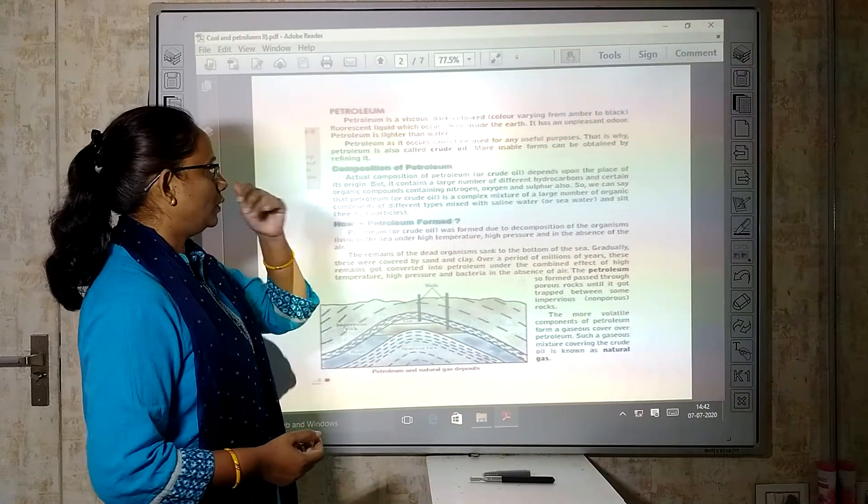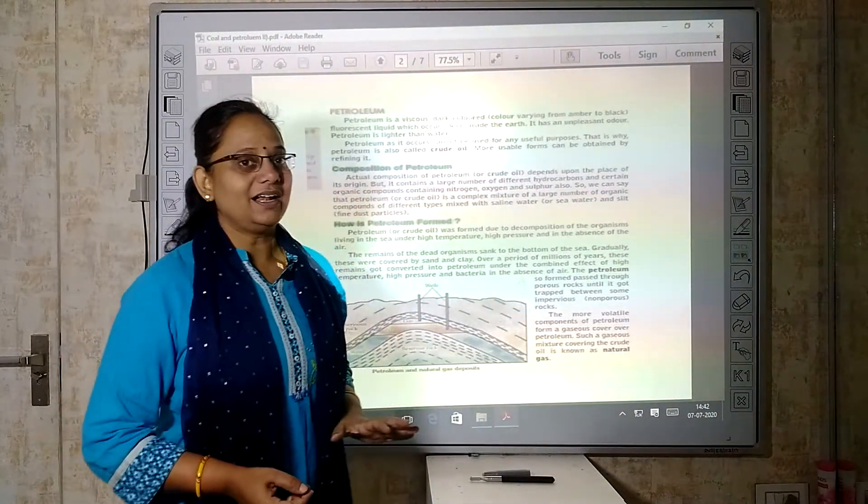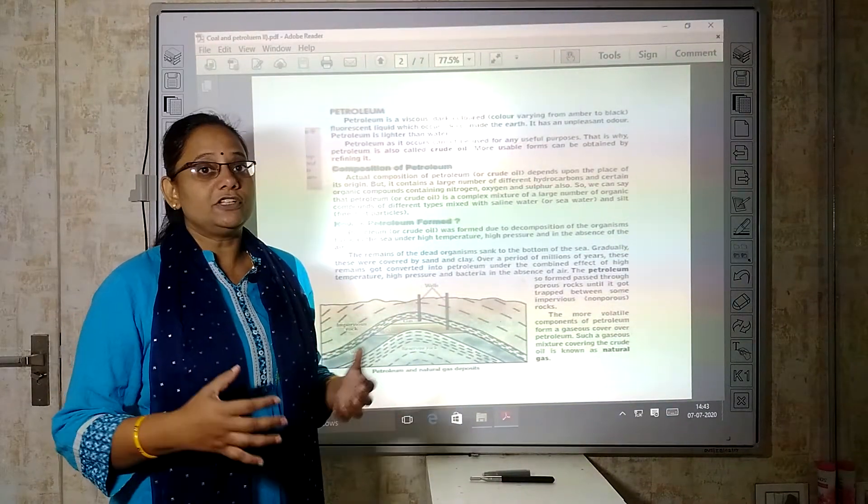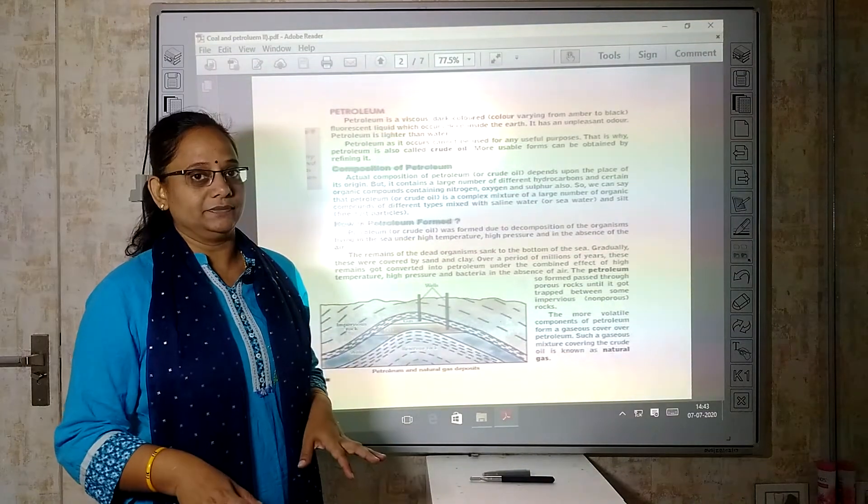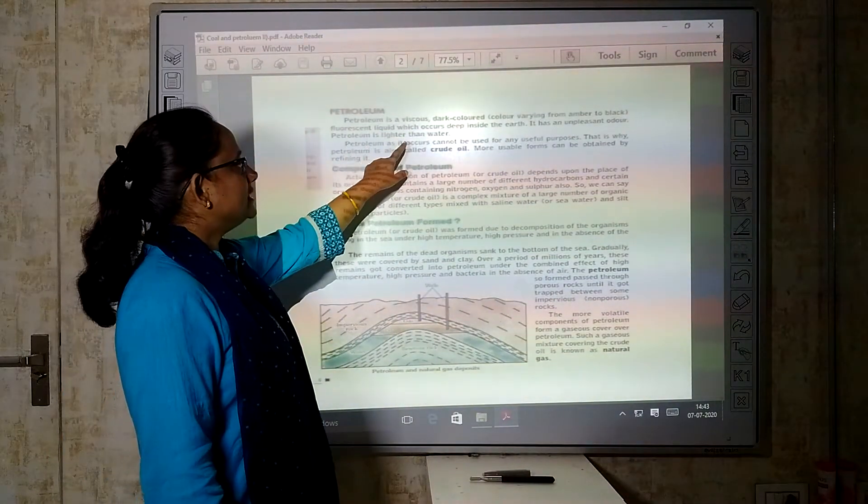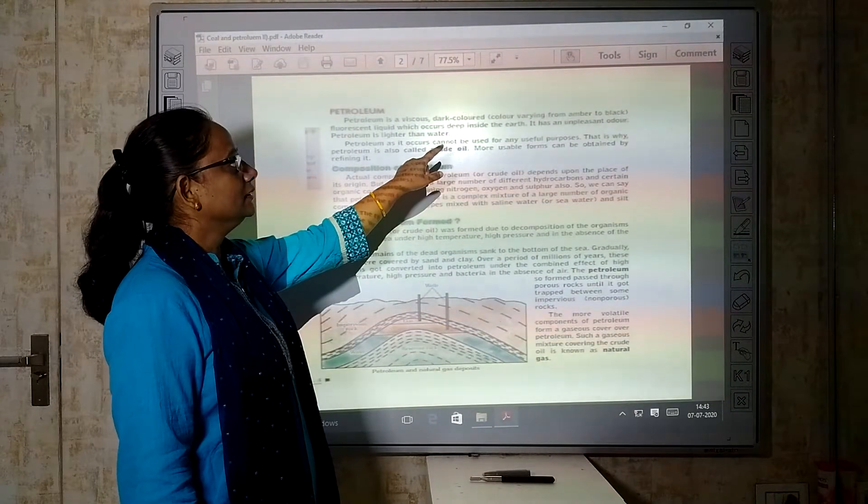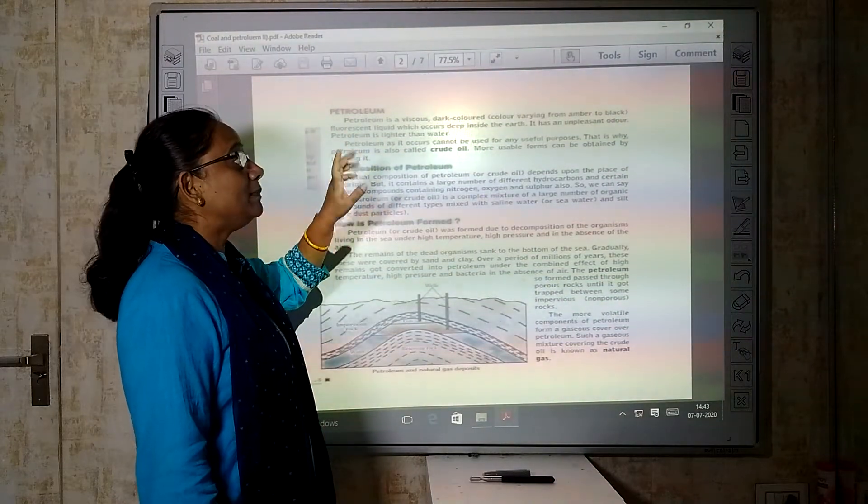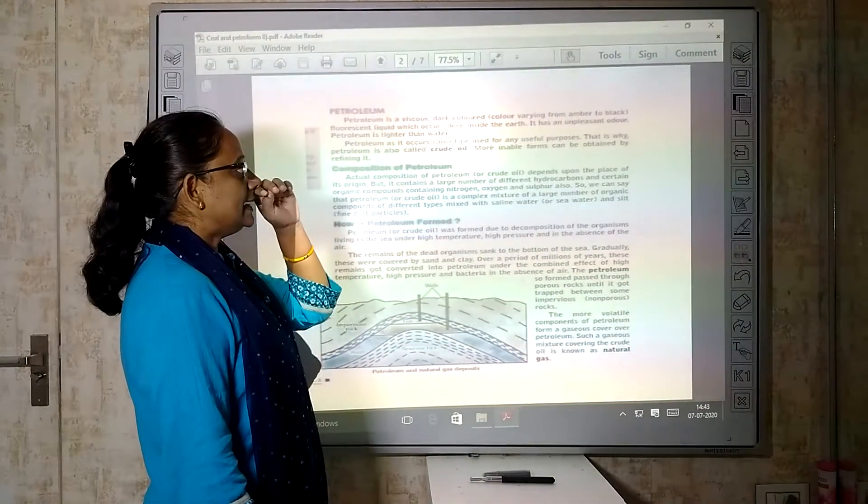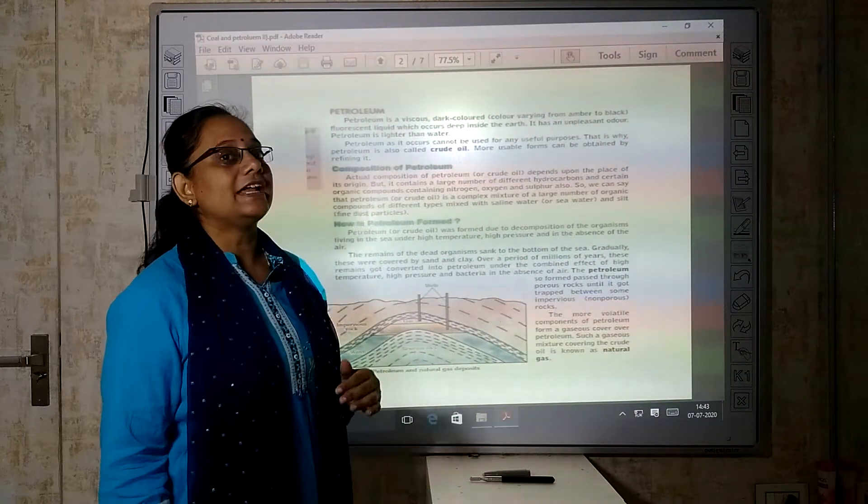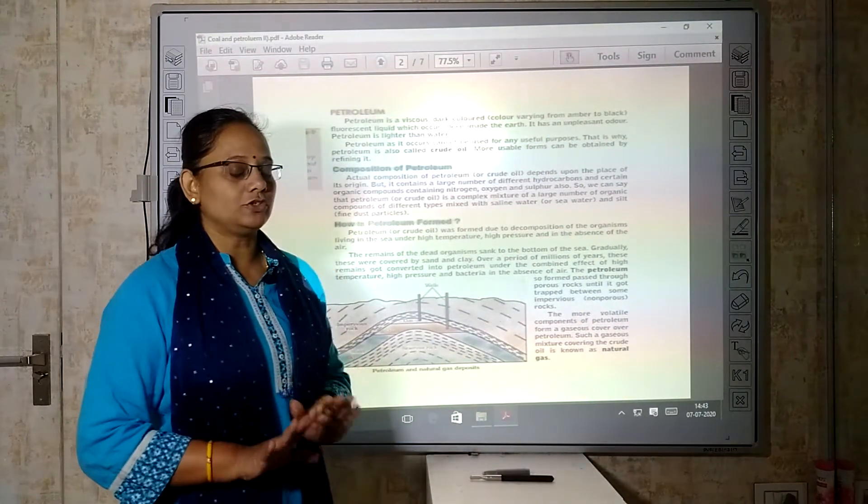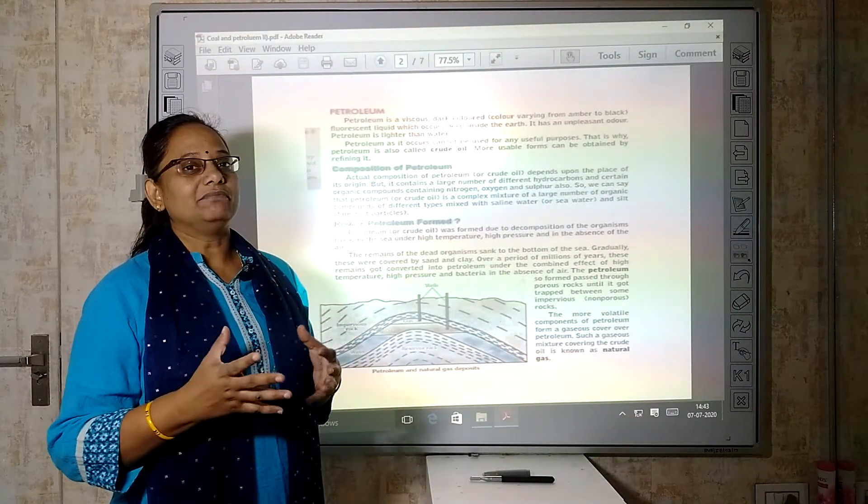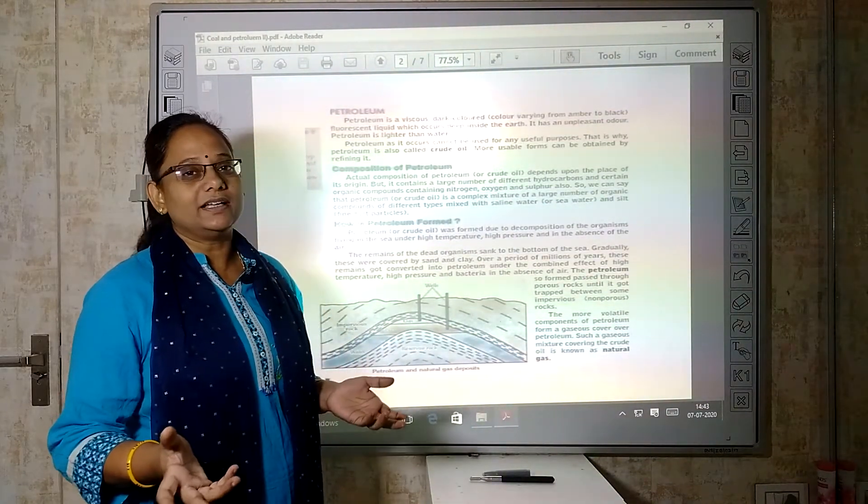That is petroleum. Petroleum is a dark colored liquid and it is having a very unpleasant smell which we cannot bear. Petroleum is a viscous dark colored liquid, color varying from amber to black, fluorescent liquid which occurs deep inside the earth. It has an unpleasant odor and is lighter than water. Petroleum is a viscous liquid and its odor is very unpleasant.